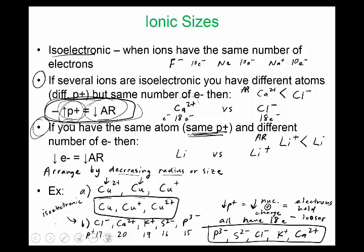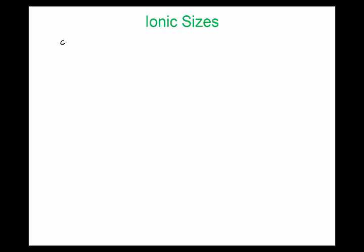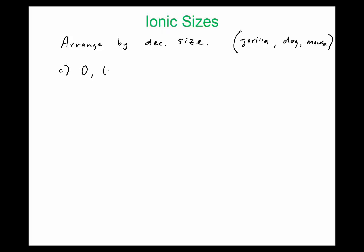On the next slide I have two similar ones for you to try. Arrange these by decreasing size — from big to small. Try this one: oxygen, oxygen with a minus one, and oxygen with a minus two. And then try this one: I⁻, Cs⁺, La³⁺, and Ba²⁺. Give those a try.